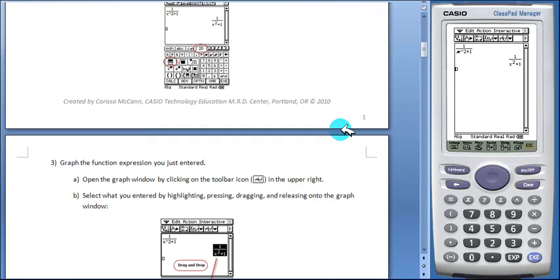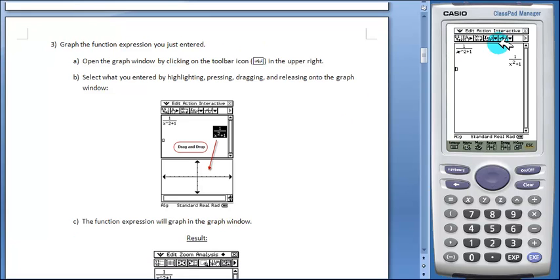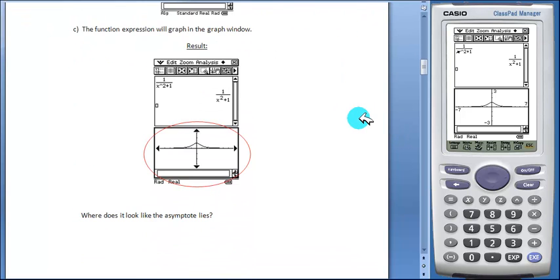Students will then open the graph window by tapping this icon button. Highlight, press, drag, and release into the graph window and the function graphs. They will then make a statement about what they see.